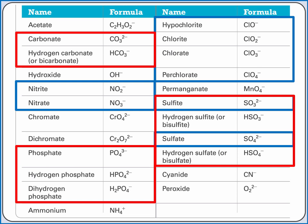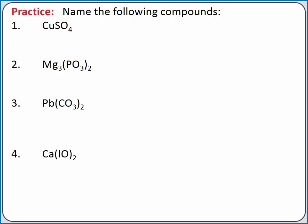Since naming is a fundamental skill, we'll want to know the formula, including charge, for our polyatomic ions. Let's practice naming ionic compounds with polyatomic ions. For CuSO₄, copper is a type 2 metal, so we need to determine its charge. We know the formula unit is overall neutral, so the charge on 1 copper plus the charge of sulfate equals 0. We know the charge on sulfate is −2, so the charge of copper must be 2+. Our compound is copper(II) sulfate.